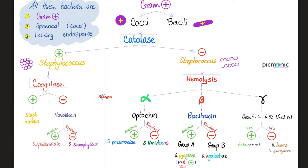Let's go back to square one. Are you bacteria, virus, fungus, or parasite? I am bacteria. Are you gram positive or gram negative? I am gram positive — purple. Are you a coccus or a bacillus? I am a coccus. Are you catalase positive or catalase negative? I am catalase negative. I am streptococcus, and we are arranged in chains — spherical, but arranged in chains.